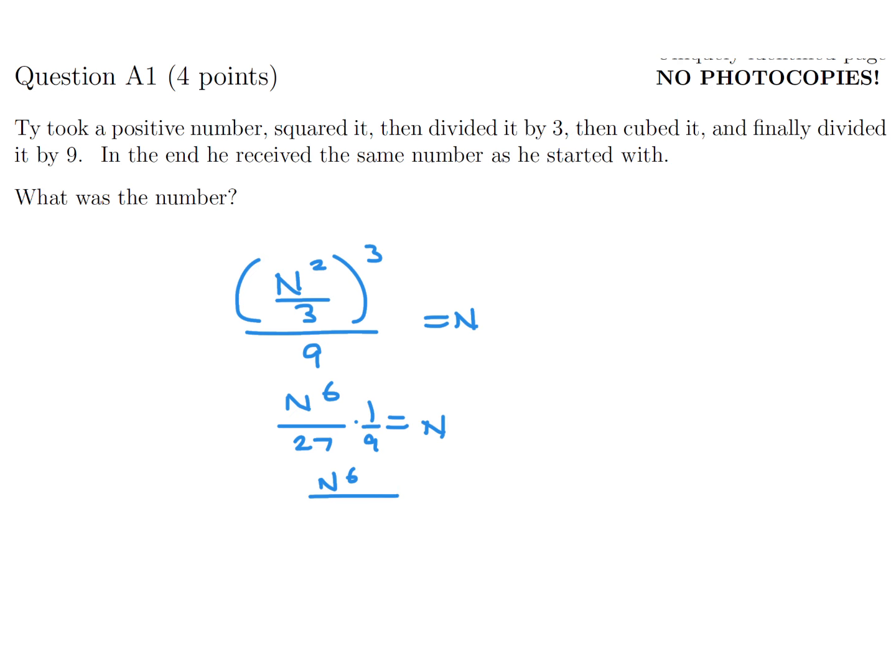So that would be n to the 6 times, what's that, 243, and then cross multiply and divide through, and you get n to the power of 5 is 243, and then the fifth root of 243 is 3.